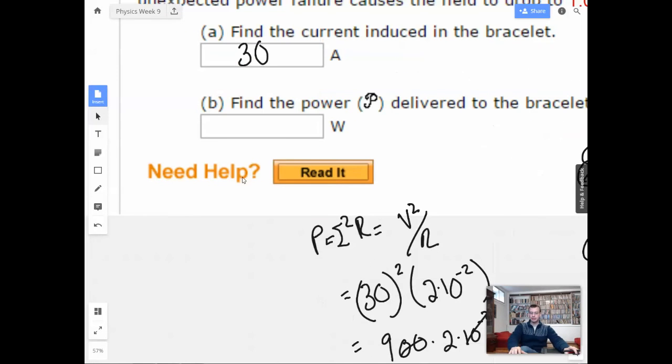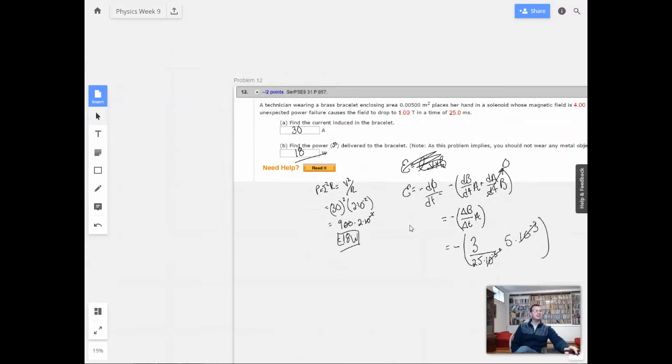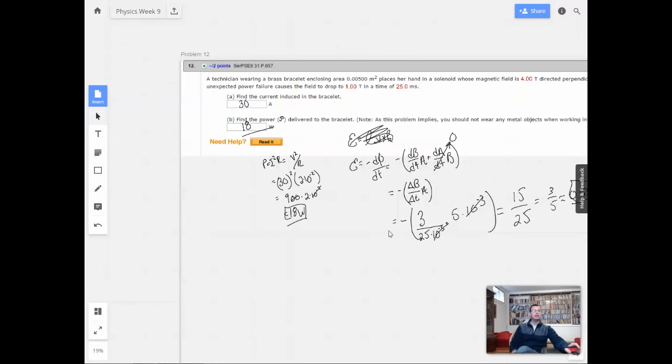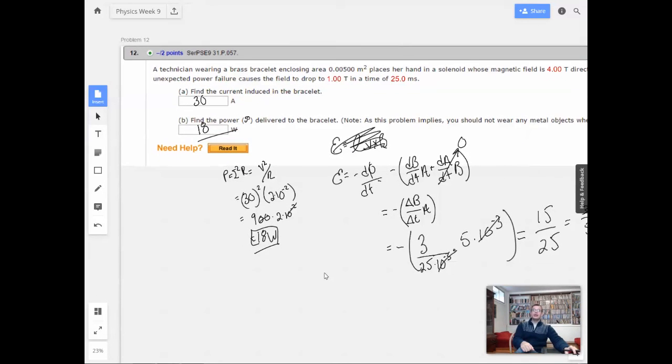Nice. Good for me. There we go. 18 watts. That's all there is to that one. That's pretty good. I liked it. Not too bad. Put a little realism in there and I could do all the math without Wolfram. I like it. Alright. That's number 12. On to number 13.